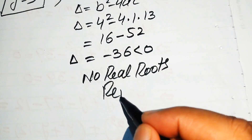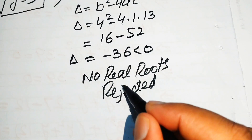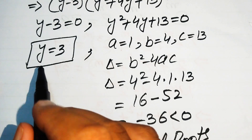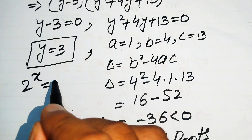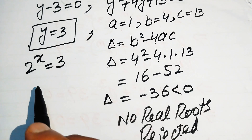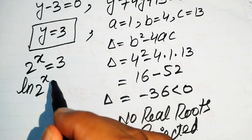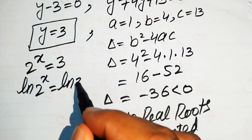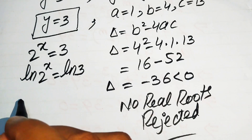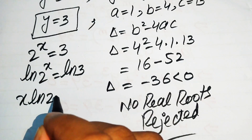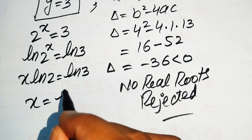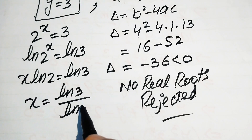Since the quadratic has no real roots, we only proceed with the first case: y equals 3. Recalling that y equals 2 to the power of x, we have 2 to the power of x equals 3. To find x, we take the natural log of both sides: log(2 to the power of x) equals log 3. Using the log power property, x times log 2 equals log 3, so x equals log 3 divided by log 2.